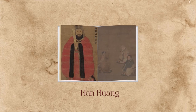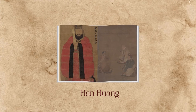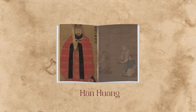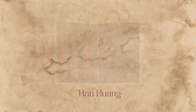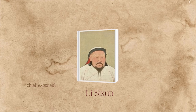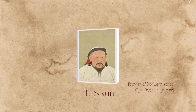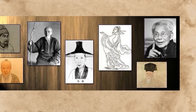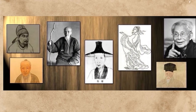Fourth, Han Huang — courtesy name Taichong, formerly Duke Zhongsu of Jin — was an official of the Tang dynasty serving as chancellor during the reign of Emperor Dezong. He was praised by traditional historians for his frugality and personal integrity, but blamed for being overly harsh and cruel in his governance. The fifth and last famous Chinese artist is Li Sixun. Li Sixun was a Chinese painter later seen as the chief exponent of the decoratively colored landscape style of the Tang dynasty and as the founder of the Northern School of Professional Painters.